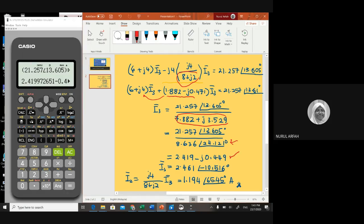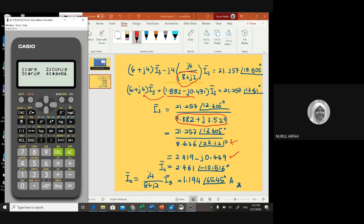And then view in phasor form. Press 3, equals, and you get this answer: 2.461 at negative 10.516 degrees. This is the answer for i3. You can substitute into the equation of i2 and multiply by 4i.